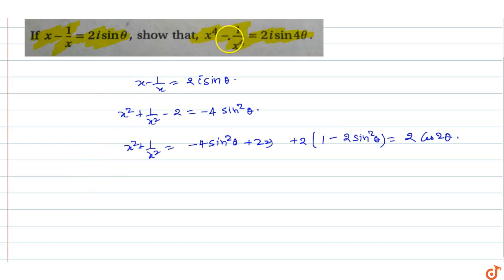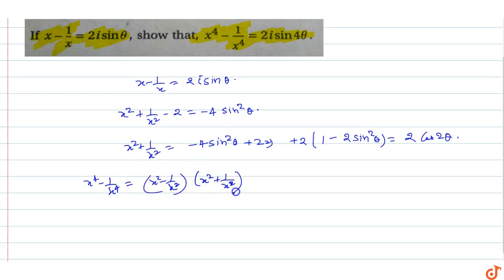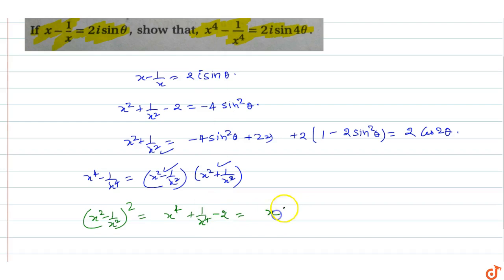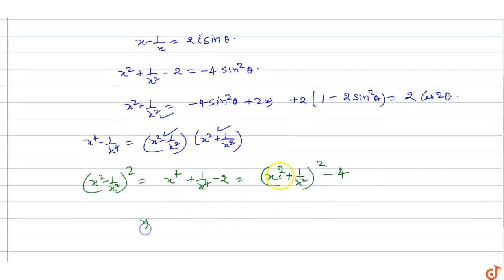Now we find x⁴ minus 1 by x⁴. We write this as (x² - 1/x²)(x² + 1/x²). We know that (x² - 1/x²)² equals x⁴ + 1/x⁴ minus 2, which equals (x² + 1/x²)² minus 4.